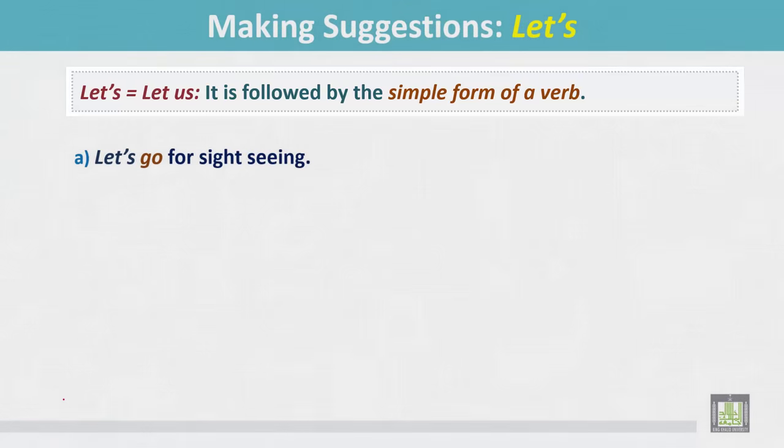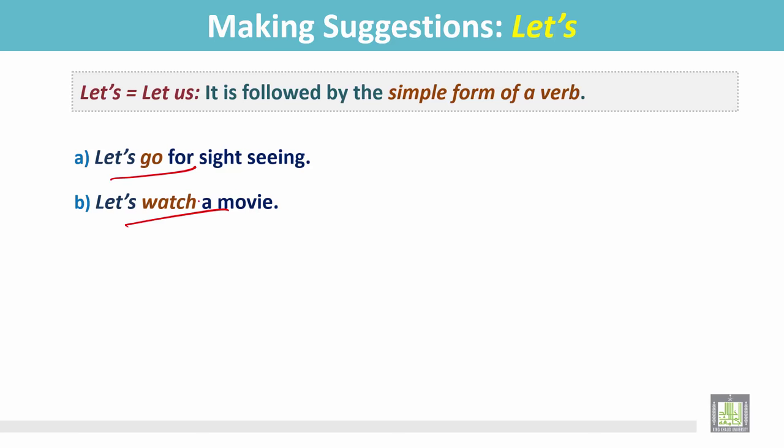For example: 'Let's go for sightseeing.' 'Let's watch a movie.' In both sentences the subject is imperative and it is followed by the simple form of the verb.